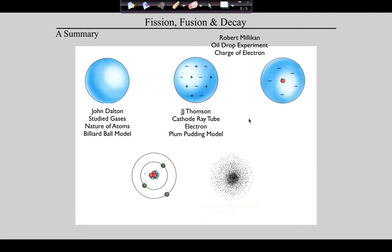Along comes a dude named Robert Milliken. He did his oil drop experiment, and by doing that he figured out the charge of an electron. Understand he didn't change our atomic model — he just refined it by telling us what the charge of an electron is. We knew it was negative; he gave it a number. Milliken got a Nobel Prize for this work. His lab is still set up in a building underneath the University of Chicago football stadium. But Milliken didn't change our model of the atom — he simply refined Thompson's model by measuring the charge of an electron.